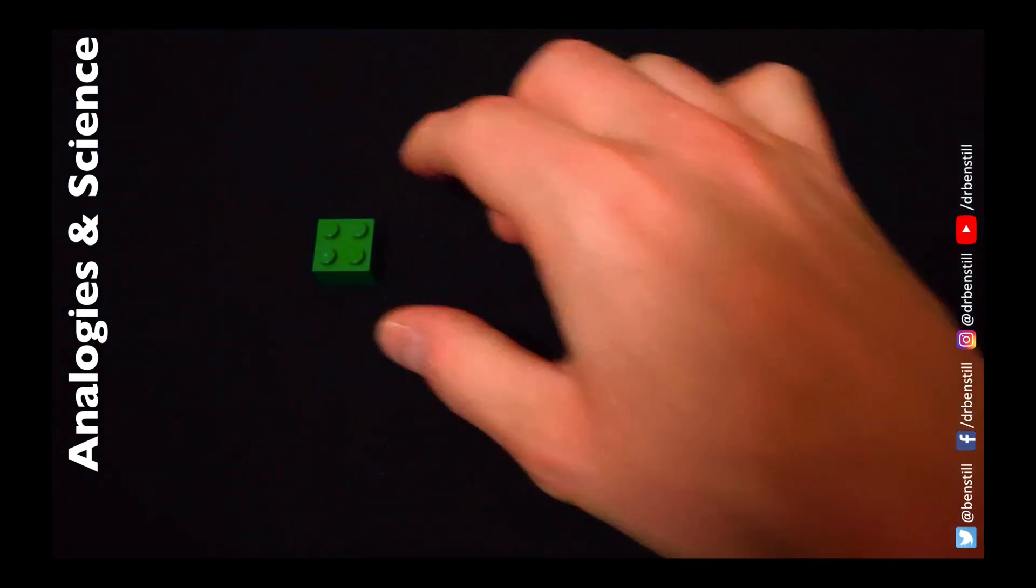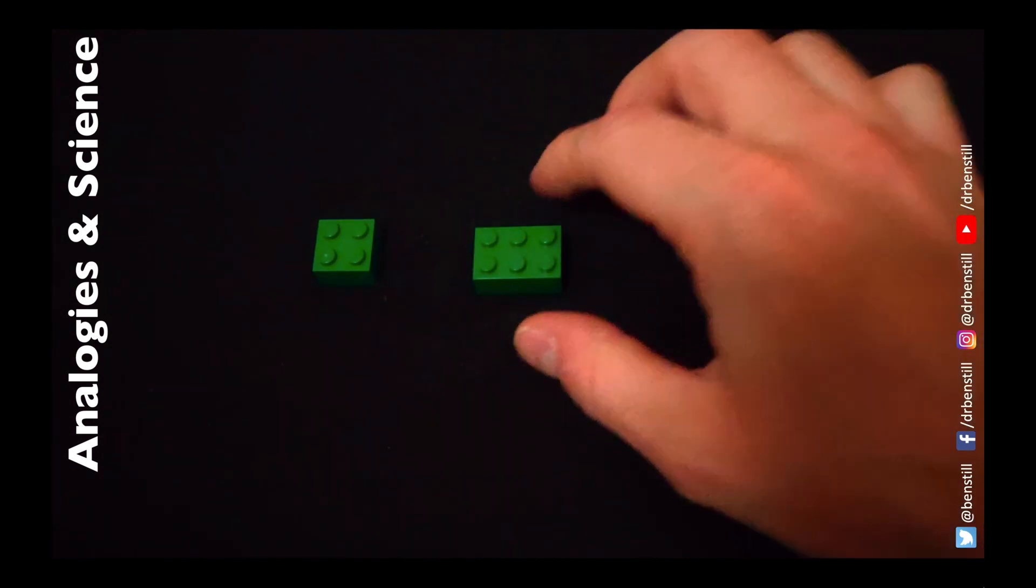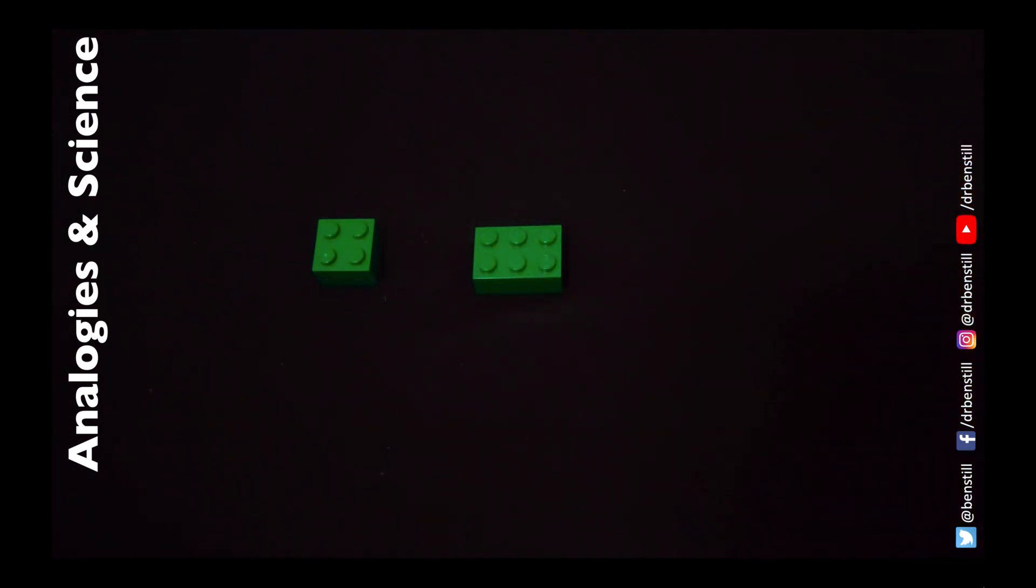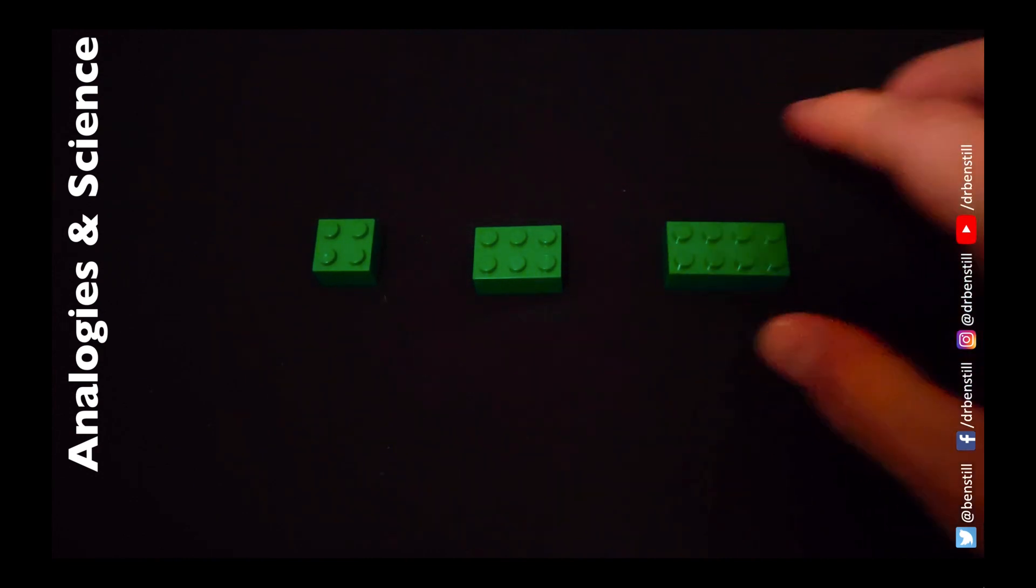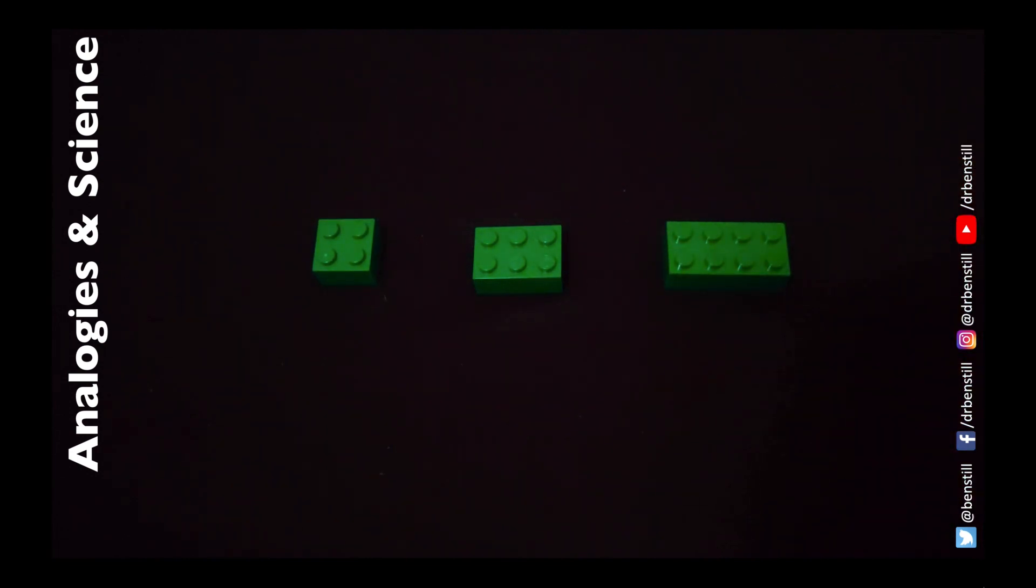Now again we can use the colours of the Lego bricks as well as the shapes to represent certain things in the standard model of particle physics. For instance we can use the size of the brick to give an idea of the relative masses of each of these fundamental building blocks. The larger the block the greater its mass must be.